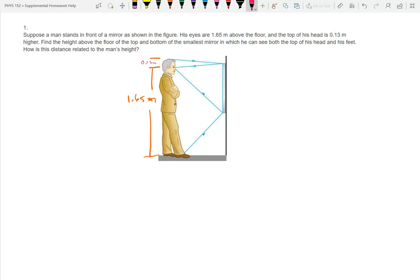Find the height above the floor of the top and bottom of the smallest mirror which you can see both the top of his head and his feet. How is this distance related to the man's height? So what we're looking for is height to the bottom, height to the top, and then the difference between those two, height of the mirror.